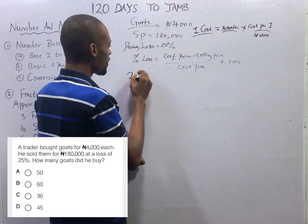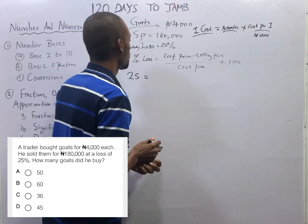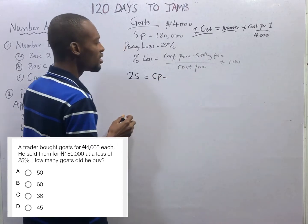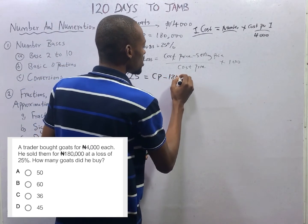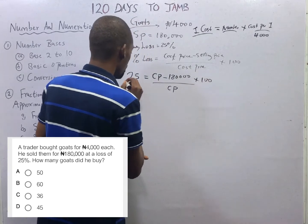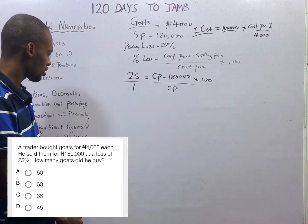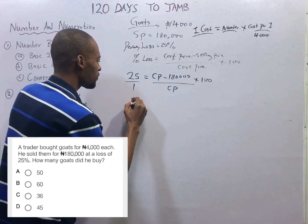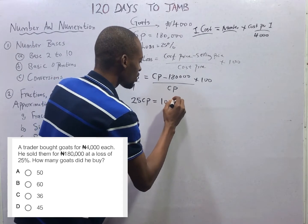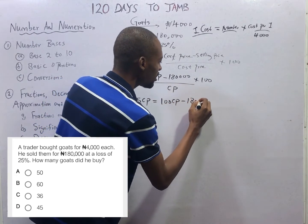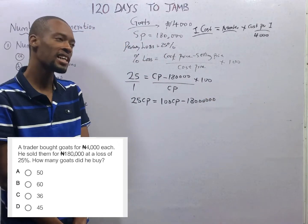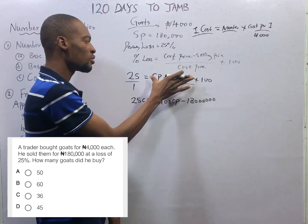So, percentage loss: 25% equals cost price minus selling price of 180,000 naira, over cost price, times 100. Cross multiplying, 25 times cost price equals 100 times cost price minus 18,000,000. Then use 100 to multiply through — that is what we should always do.